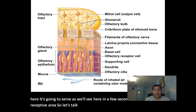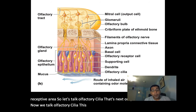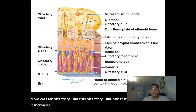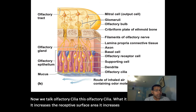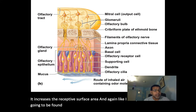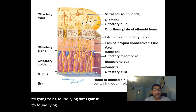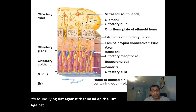These are the olfactory cilia. The olfactory cilia increases the receptive surface area, and it's found lying flat against that nasal epithelium — against those epithelial cells, against the olfactory epithelium.